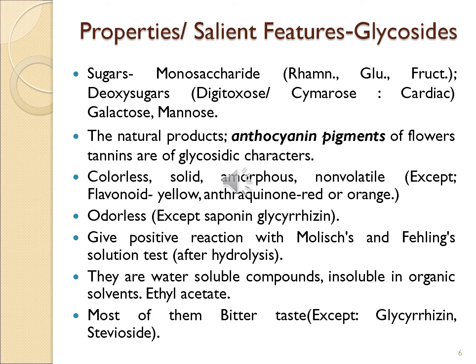Glycosides also include anthocyanin pigments of flowers which are associated with tannins and also show glycosidic characters. Glycosides are mostly colorless, solid, amorphous compounds, non-volatile in nature, except flavonoid glycosides which are yellow in color and anthraquinone glycosides which are red and orange in color.